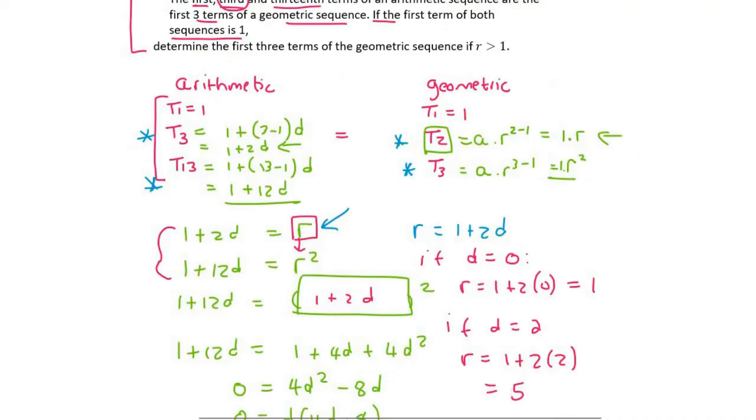I would just like to highlight something though. They said that determine the first three terms of the geometric sequence if r is bigger than 1. So if r is 1, that's not allowed. So this one is a no solution, which means that that d is also a no solution. d equals 0 is no solution. So the only valid one that we can use is this one over here.